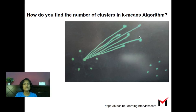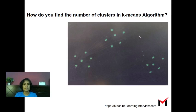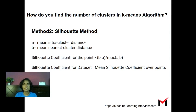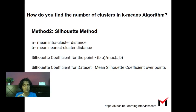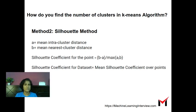The silhouette coefficient is b minus a divided by max(a, b). Here, a tells us how cohesive the clusters are — we want a small mean intra-cluster distance. b is the mean nearest-cluster distance — we want this to be large, meaning the clusters are spread out and far from each other. So we want b minus a to be large.